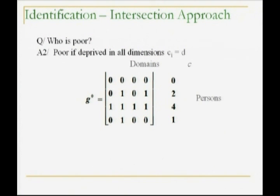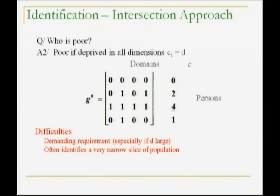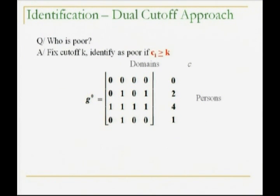The intersection approach says you're only poor if you're deprived in everything. Of course, person three becomes the only poor person, and the difficulty is that it's likewise a demanding requirement, particularly if the number of domains is large — it often identifies a very narrow slice of the population approaching zero in many reasonable cases. So what do we do? Something in between. That is arbitrary, and I'll justify this by saying the poverty line we've all been using in income space is pretty arbitrary itself. No matter how justified by whatever criterion you use to construct that poverty line, once it's in place and used for 10 years, what you're doing is fixed and given — what we call arbitrary. I have no trouble with this. The dollar-a-day made a lot of sense for certain purposes.